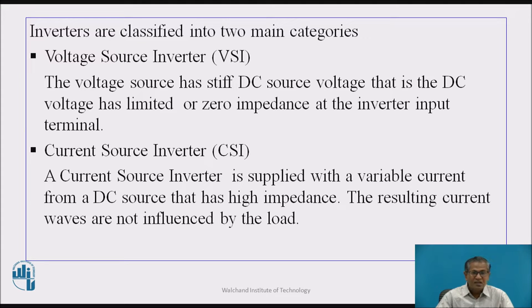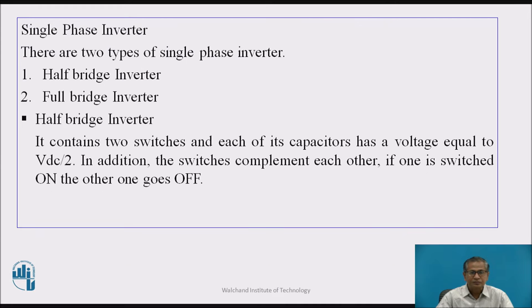Classification of inverters. Inverters are classified into two main categories: voltage source inverter and current source inverter. In a voltage source inverter, the DC source has stiff voltage — that is, limited or zero impedance at the inverter input terminal. A current source inverter is supplied with a variable current from a DC source that has high impedance; the resulting current waves are not influenced by the load. There are two types of single-phase inverters: half bridge inverter and full bridge inverter.